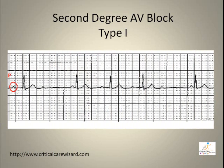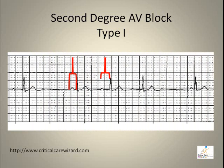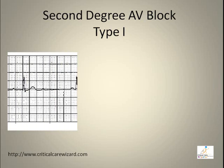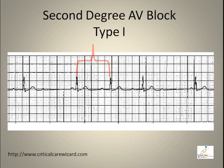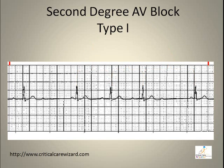In second degree AV block Type I (Wenckebach), there is a P-wave present with a missing QRS. The PR interval is lengthening, followed by a P-wave without a QRS. The rhythm is irregular, and the atrial and ventricular rate is variable.